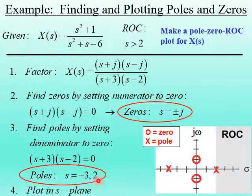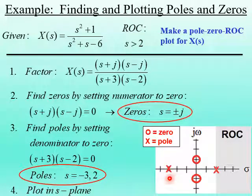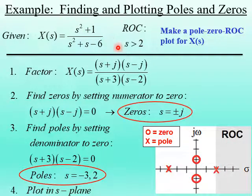To find the poles, we set the denominator to zero: s plus three times s minus two equals zero. This gives poles at s equals minus three and s equals plus two. We then plot these in the s-plane. The two zeros — marked with O — are at plus j and minus j on the imaginary axis. The two poles — marked with X — are at sigma equals minus three and sigma equals plus two. The region of convergence, sigma greater than two, is the shaded region to the right of sigma equals two.